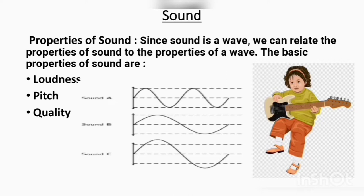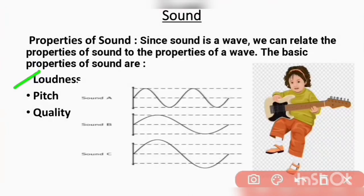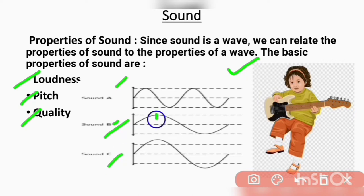Since sound is a wave, we can relate the properties of sound to the properties of a wave. The basic properties of sound are loudness, pitch, and quality. Looking at a diagram with sound A, B, and C: sound B has a lower pitch than sound A because of lower frequency, and sound B is softer than sound C because of smaller amplitude.